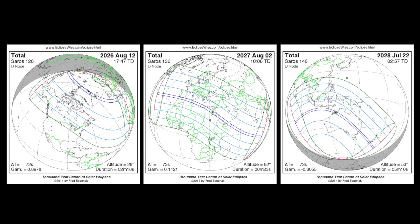Of course, that will not be the last total eclipse to occur. After skipping 2025, total eclipses will also occur in 2026, 2027, 2028, and on into the future, as well as numerous annular and partial eclipses.